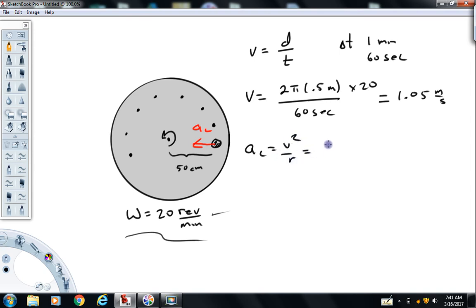So in this example, the centripetal acceleration is going to have a magnitude of 1.05 meters per second squared over 0.5 meters. Give me a moment, I'll calculate a value. I get about 2.2 meters per second squared.